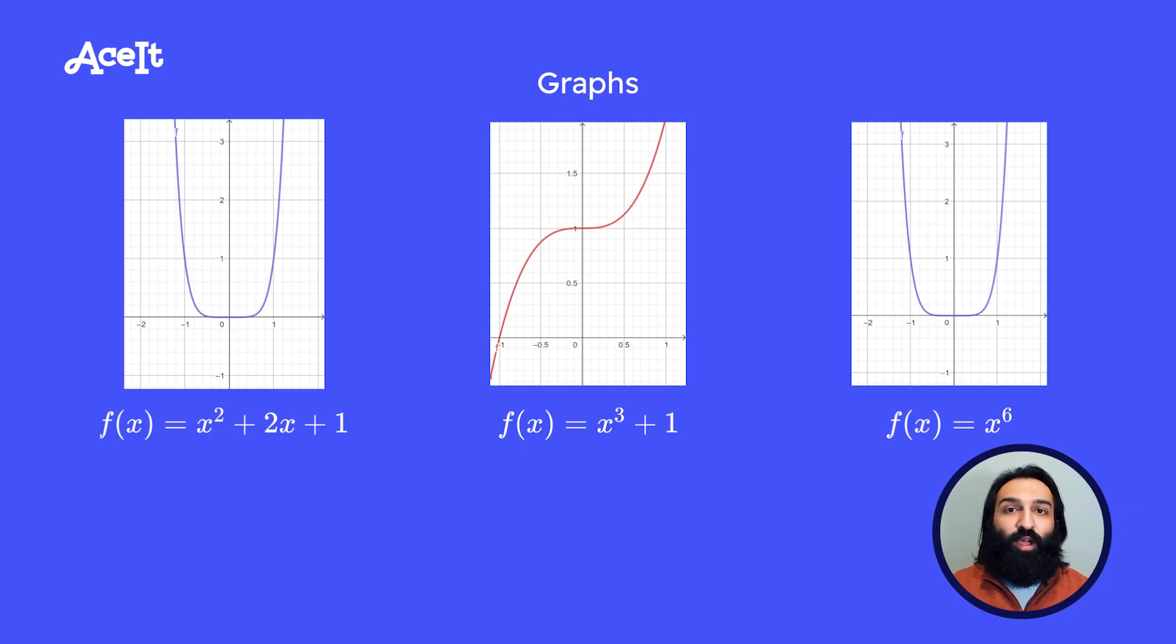We can learn a lot from a graph based on the equation alone. Out of the three graphs, do any of them look similar? The first graph on the left and the last graph on the right both look like a u, facing upwards. That's no accident. If we look at the equations for both of those graphs, we can see that the leading term's exponent is an even number. That makes it so you get the parabola shape which again looks like a u.